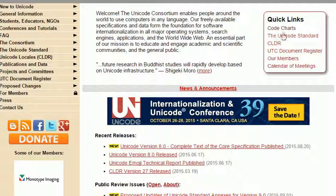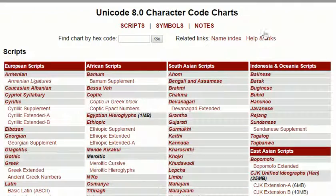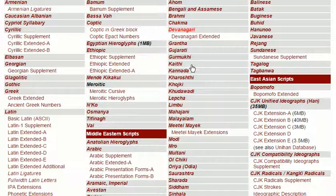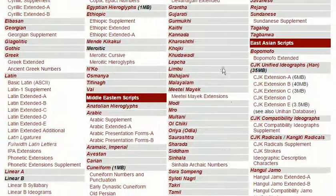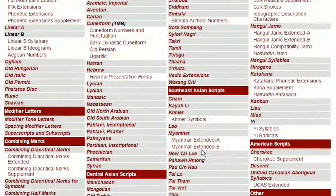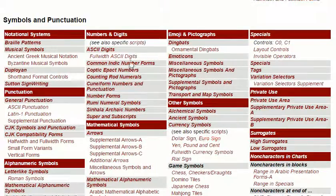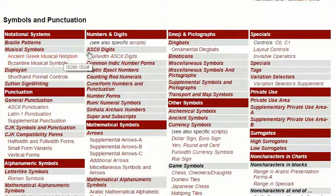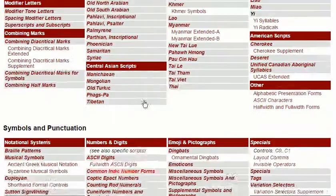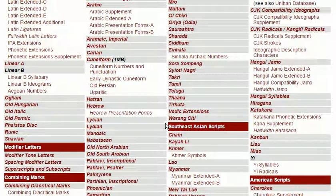I'm going to click on the code charts, and what you'll see here is a list of different languages and their charts. All of these languages are represented, and if you scroll down further, you have symbols — somewhere in here there's chess, ancient Greek musical notation, chess and checkers, dominoes, different kinds of arrows, and so on.